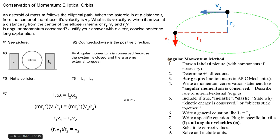This is a quick video about how to solve conservation of momentum problems for elliptical orbit. In this particular case, an asteroid of mass M follows an elliptical path.